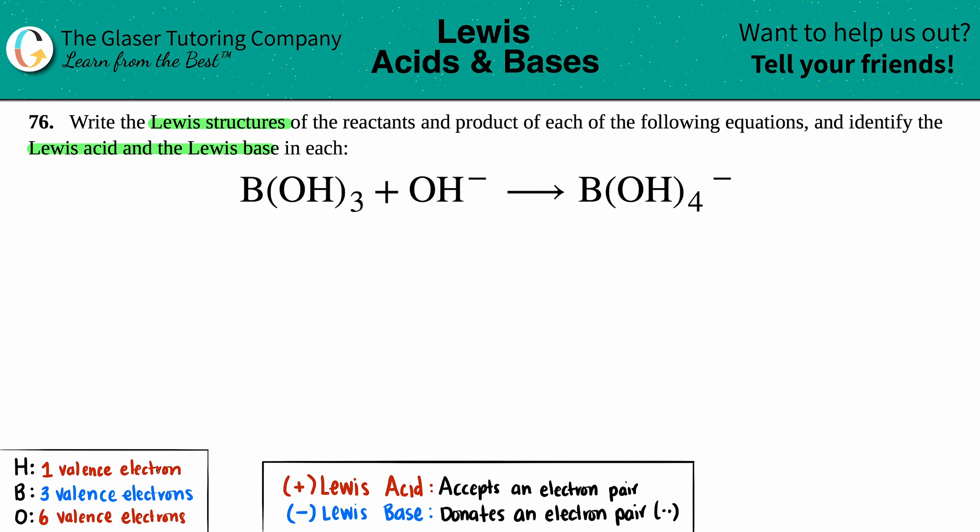I wrote down how many valence electrons each of the elements in this problem has. Let's start with B(OH)₃. It seems like I have three OHs surrounded by a boron. I'll say B, and if we want to write the complete Lewis structure, I'll separate out the O and the H. Here is one OH that's going to be bound with the boron, another OH, and then another OH that's bound to the boron.